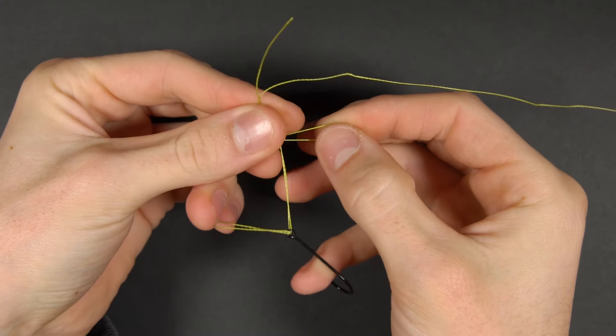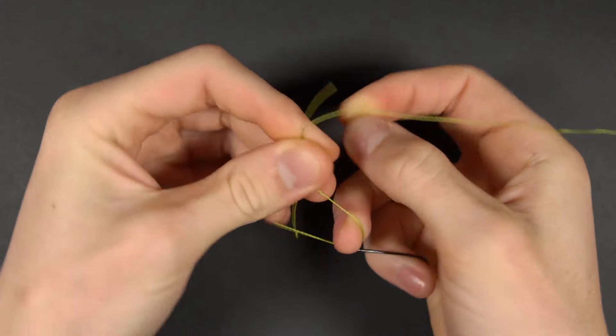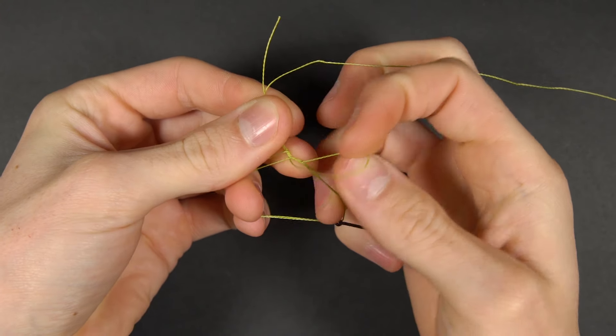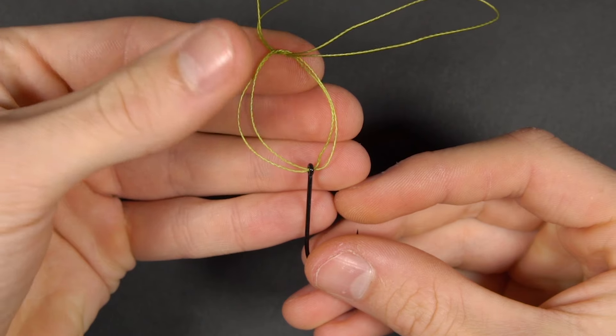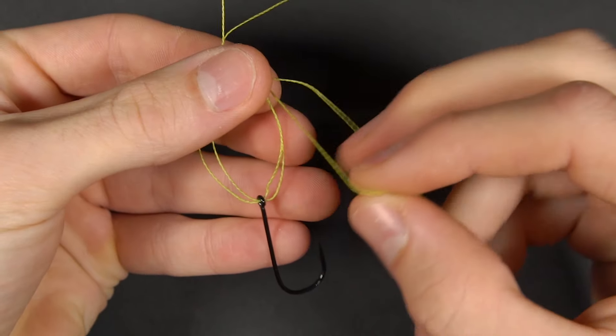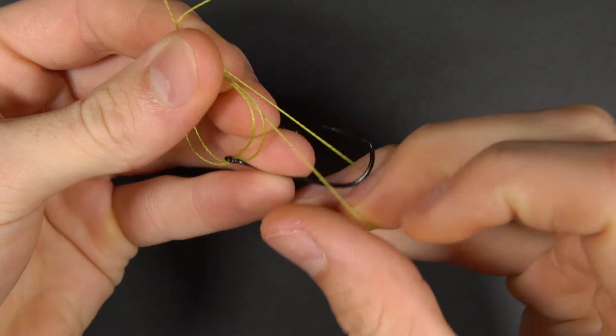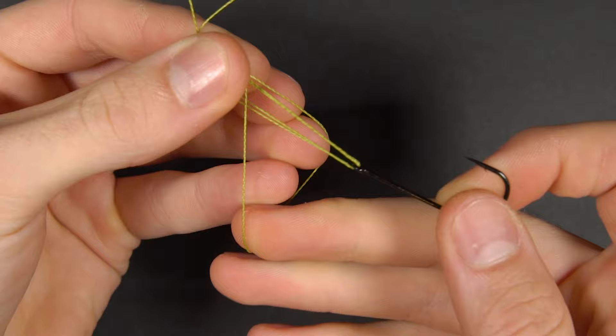Tie a loose overhand knot in the doubled up section with the hook hanging at the bottom. Whilst holding the overhand knot in one hand, pass the loop over the hook and then bring it back up above the hook.